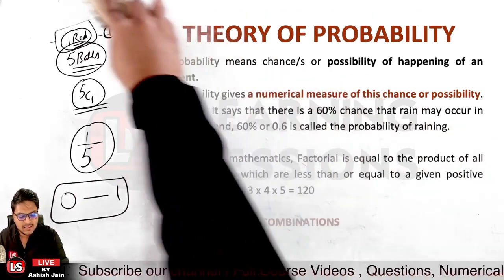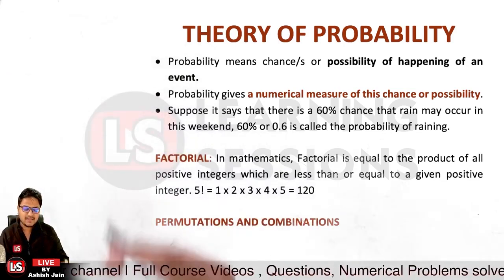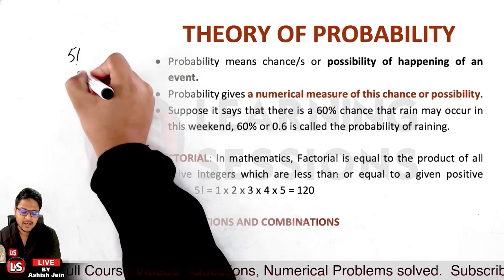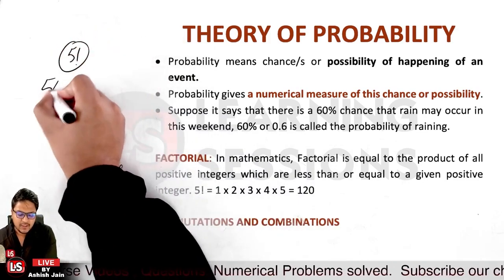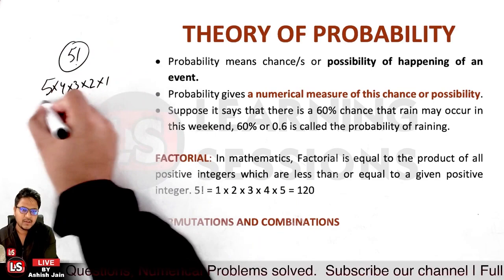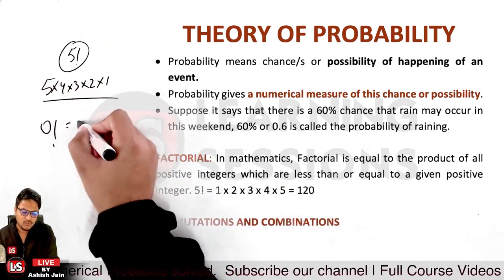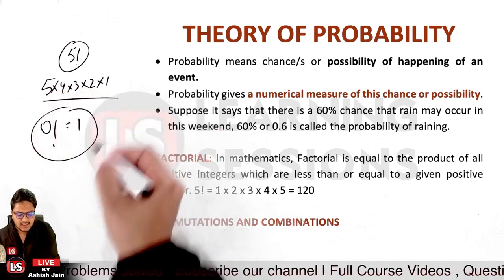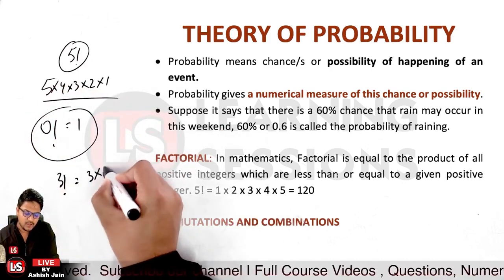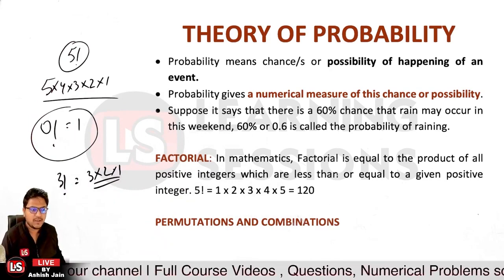Let's learn the concept of factorial. Whenever I say five factorial, it indicates five multiplied by four multiplied by three multiplied by two multiplied by one. Factorial of zero is equal to one. For example, three factorial equals three into two into one — that is actually the factorial.